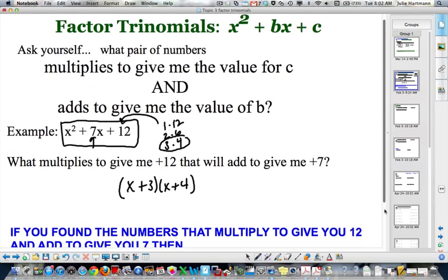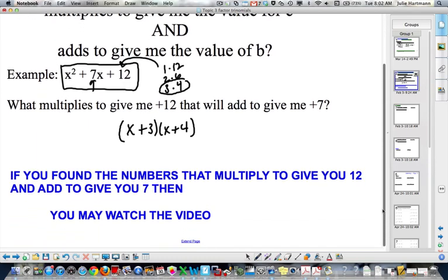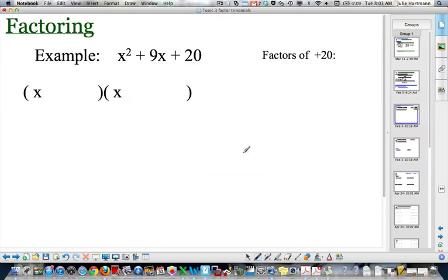All right, now, if you found the numbers that multiply to give you 12 and add to give you 7, then now you can watch the video. So, I backed up. I went over this with you. But, so let's start here. When we have x squared plus 9x plus 20, we need to multiply to give us a positive 20.